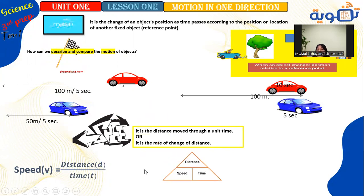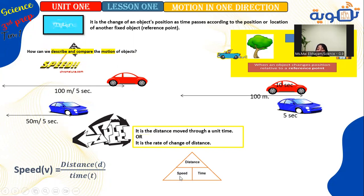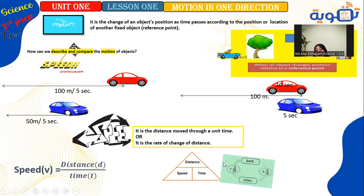If you want to calculate distance, it is speed multiplied by time. If you want to calculate time, it is distance over speed. The measuring unit of speed is kilometer per hour or meter per second.